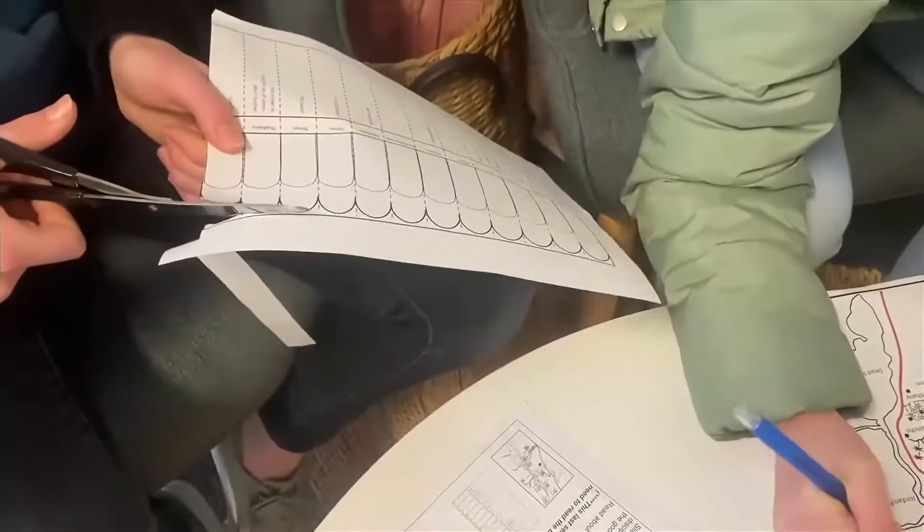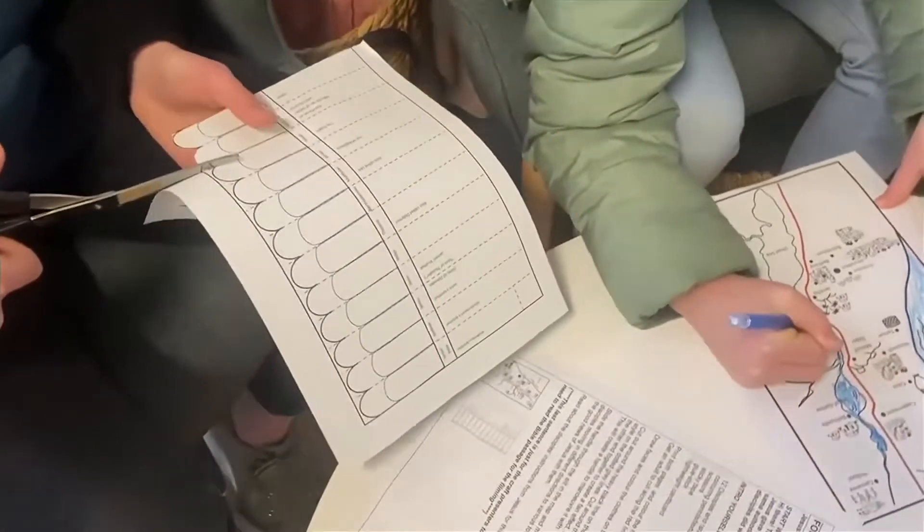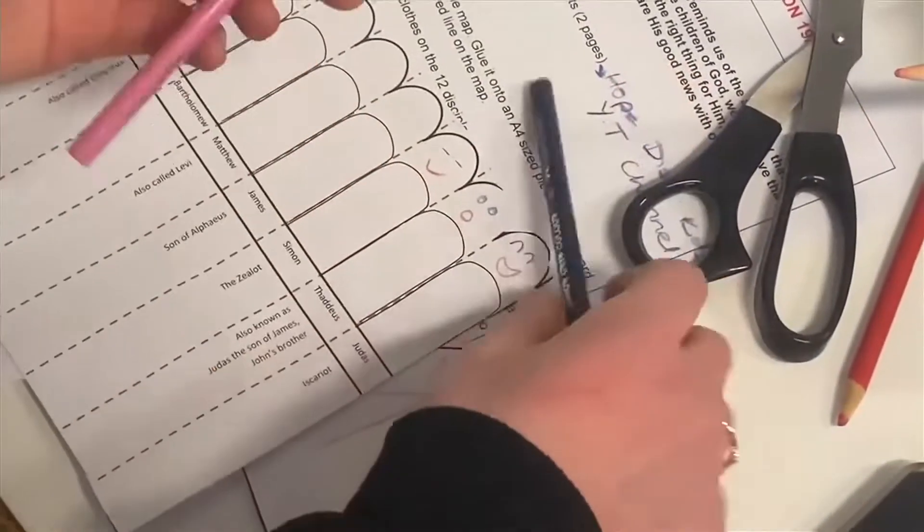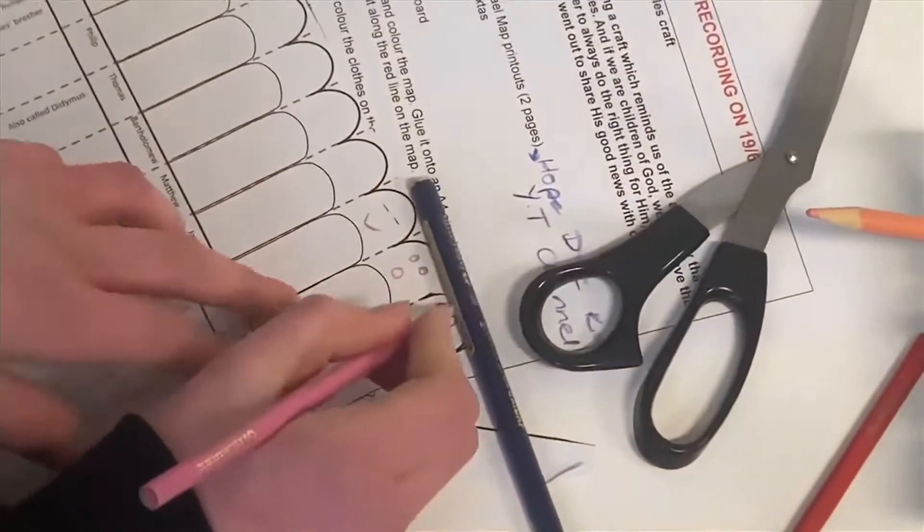Cut out around the heavy black lines on the disciple page. Draw the faces and color the clothes on the 12 disciples. Fold in concertina style on the dotted gray lines.